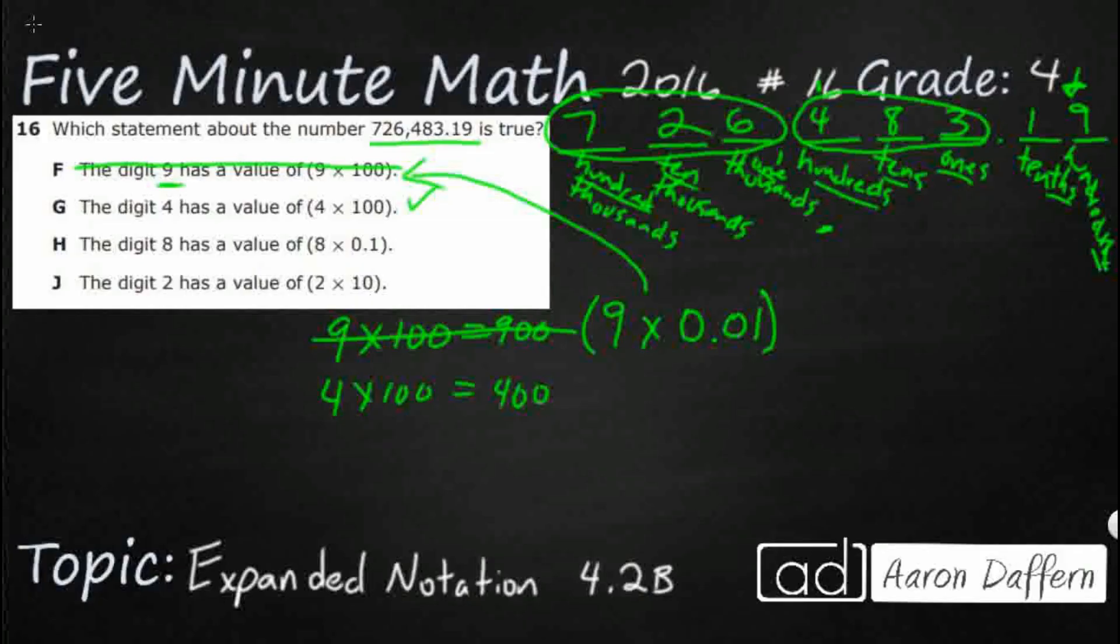H: the digit 8 has a value of—look, they're showing eight-tenths there, so 8 × 0.1. That's actually eight-tenths, but that's my tenths spot. My 8 is in my tens, so they kind of flipped the tens and the tenths, the hundreds and the hundredths. So really that's not going to work. If I wanted to show where the 8 was, it's just in the tens spot, so we're going to show 8 × 10. That's how you would show that, and that's the correct answer, but they didn't write that.